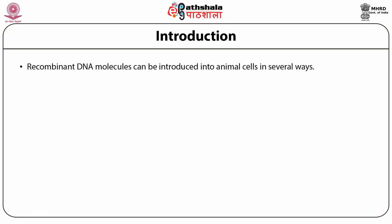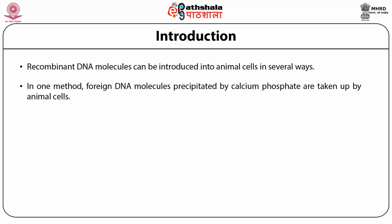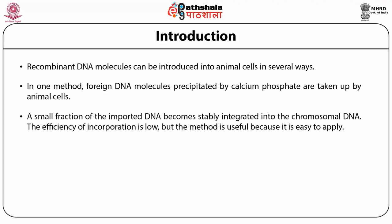Recombinant DNA molecules can be introduced into animal cells in several ways. In one method, foreign DNA molecules precipitated by calcium phosphate are taken up by animal cells. A small fraction of imported DNA becomes stably integrated into the chromosome. The efficiency of incorporation is low but the method is useful because it is easy to apply.